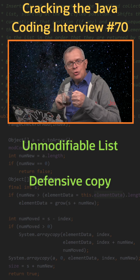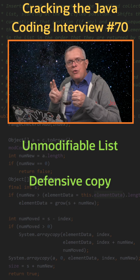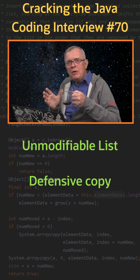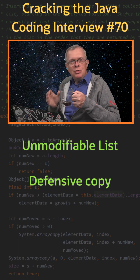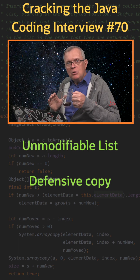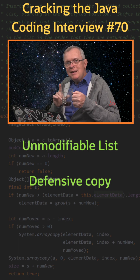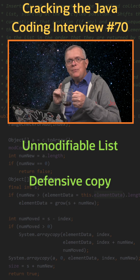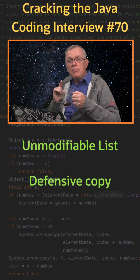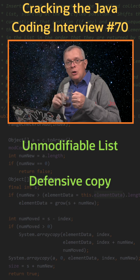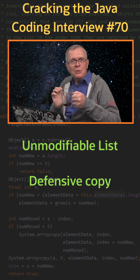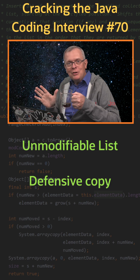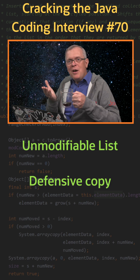Less short answer: you can use it with a vararg to create a pre-filled list, but you can also pass an array. In that case, remember that if it is an array of primitive types, what you get is a list with one element, which is your array — probably not what you want.